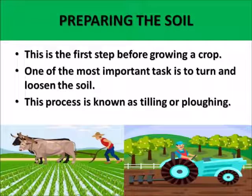The first stage is preparing the soil. This is the first step before growing a crop. One of the most important things is to turn and loosen the soil, and this process is known as tilling or plowing, which is done with the help of bullocks or tractors.